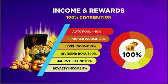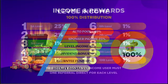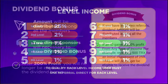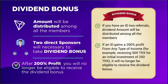Level income is earned from 10 levels generated by your team. From the first level you receive 25%, from the second level 2%, and from the third to tenth level you receive 1% each. To qualify for all levels, you must make one direct referral at each level in order to receive this level income benefit.